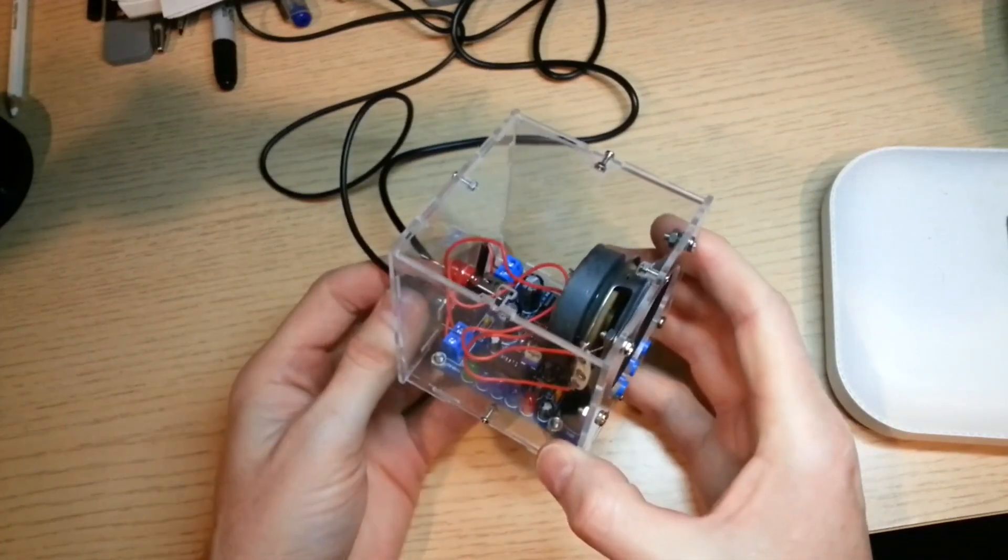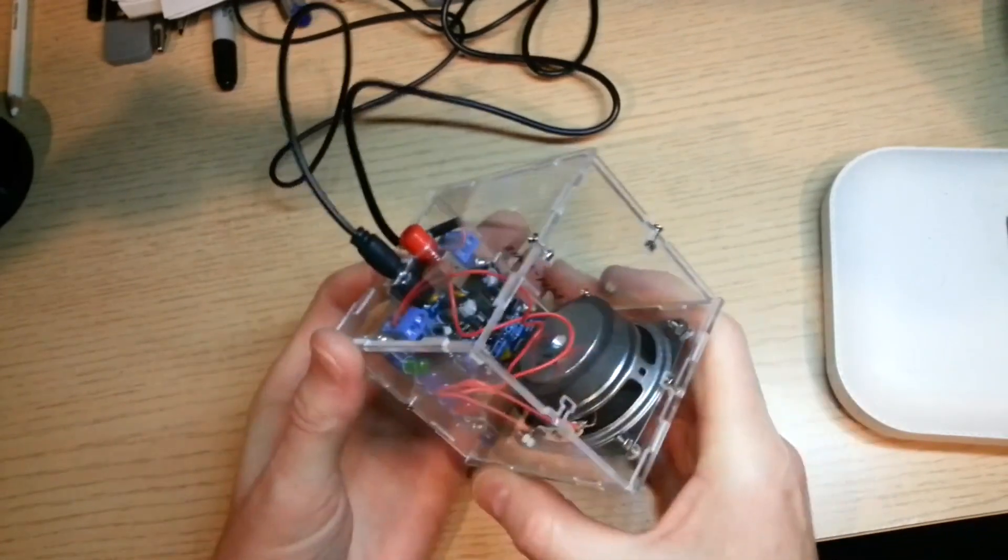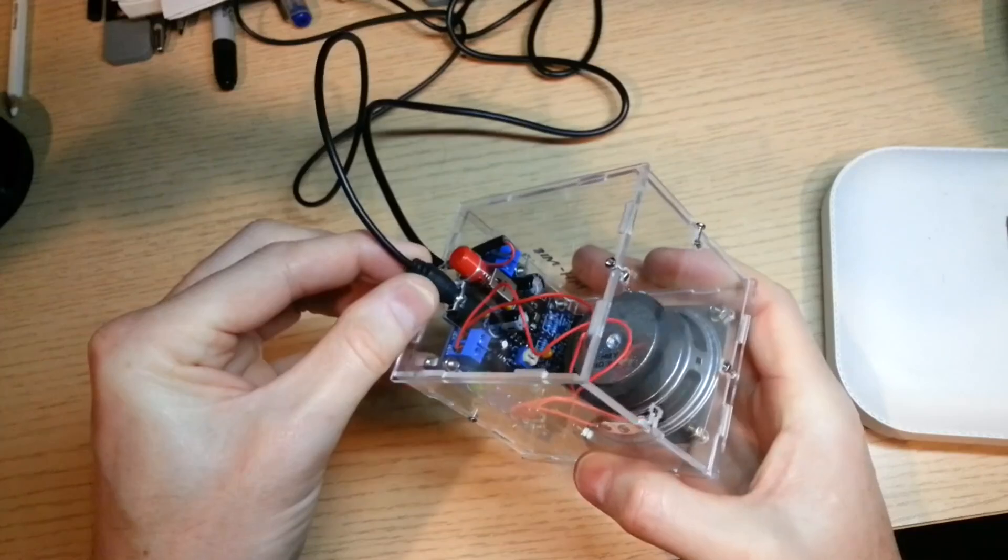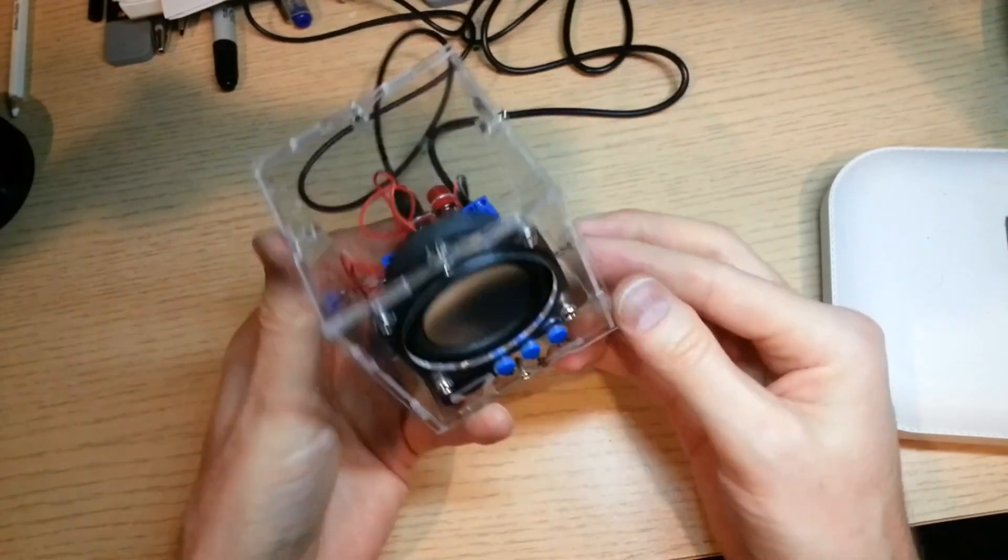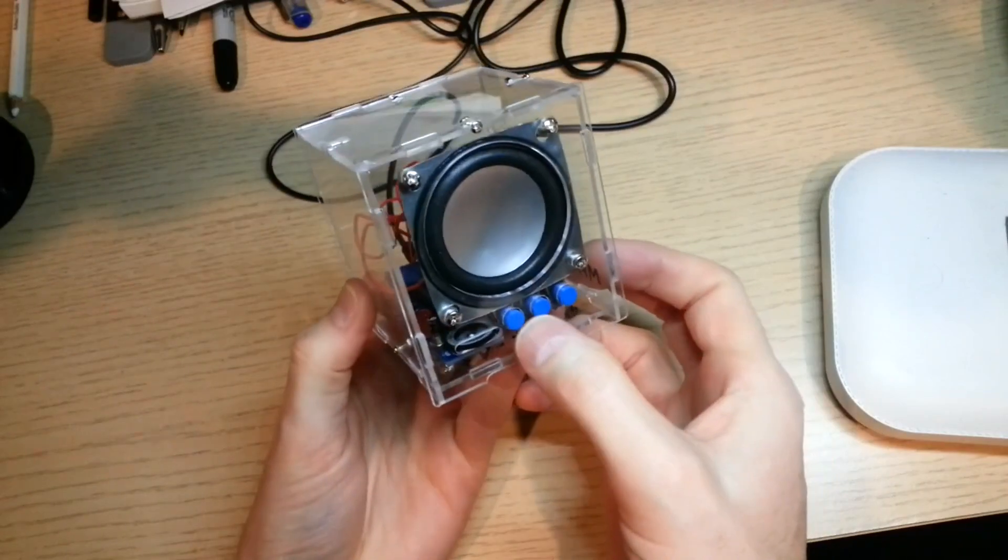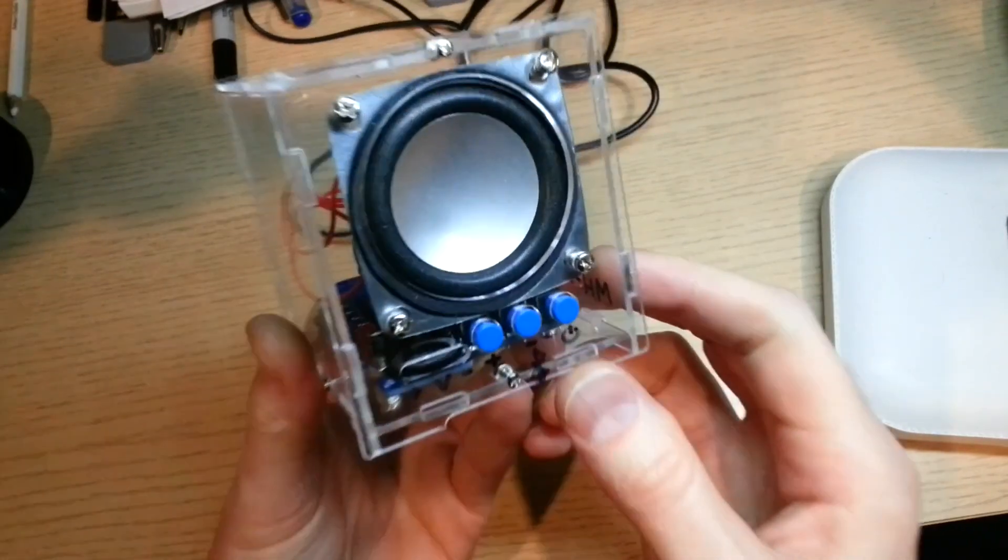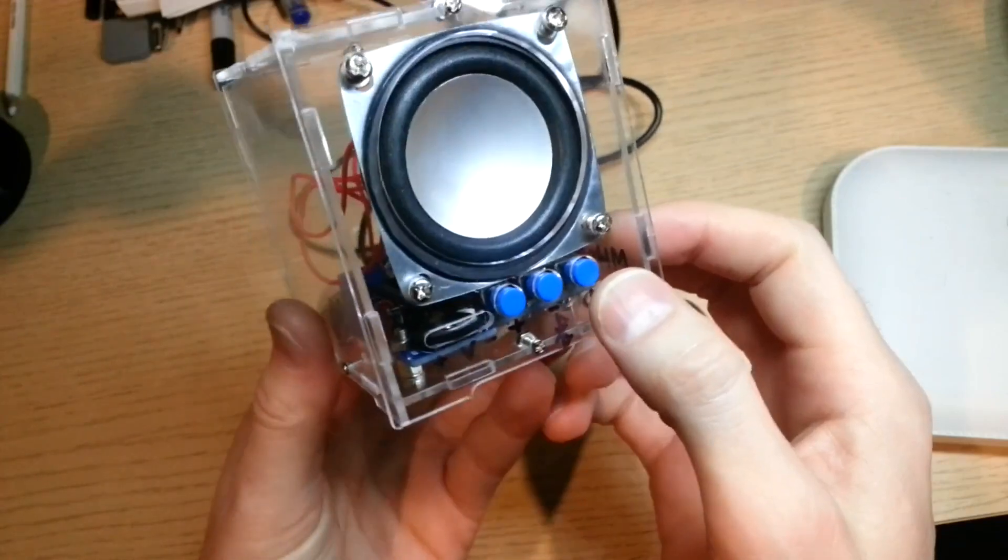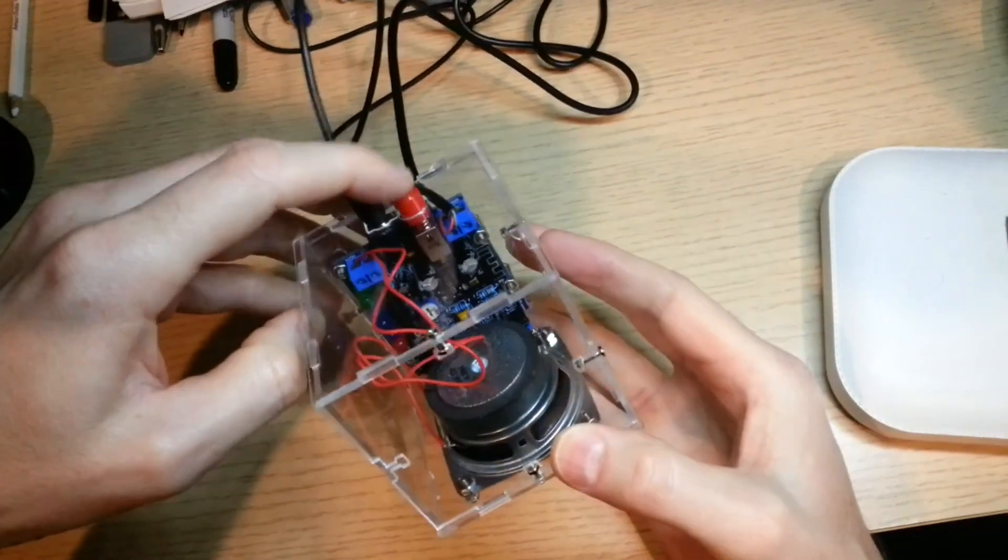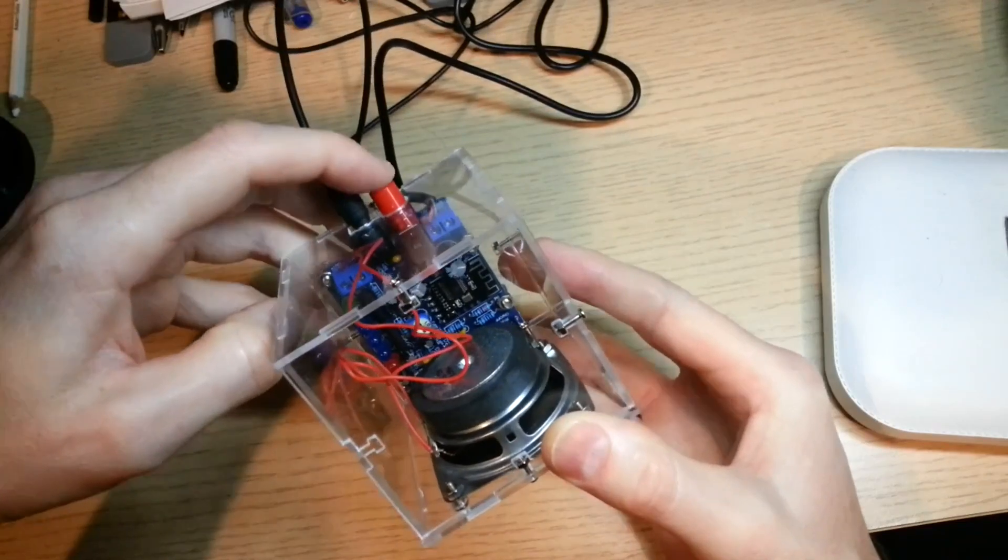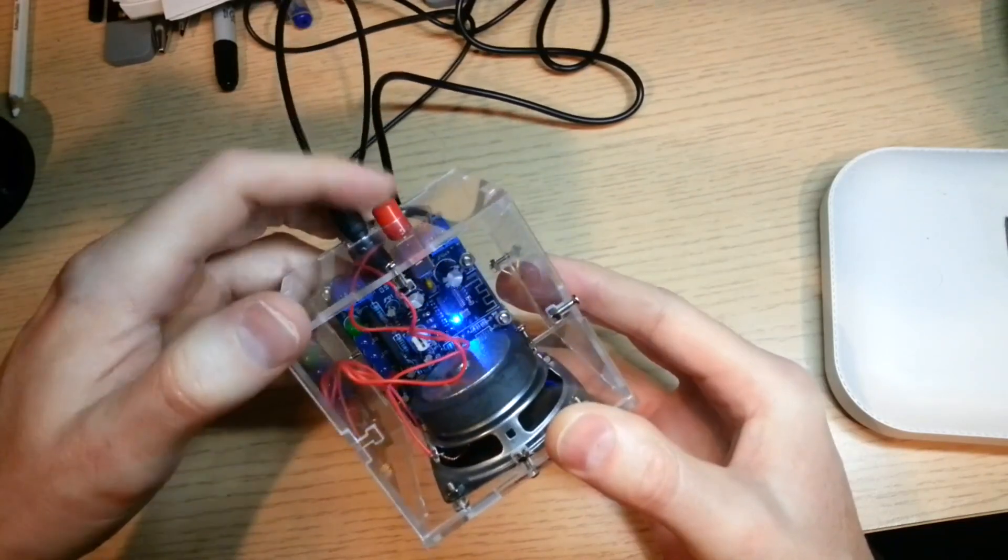Just a couple of the features that it has: it has 3.5 millimeter audio in if you want that, but it also has a Bluetooth module. The Bluetooth module is controlled by these three buttons at the front. The first one here is the power on and off of the Bluetooth module itself. This is the master on and off, and so that's off and then it's on.